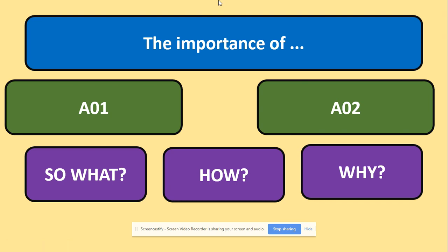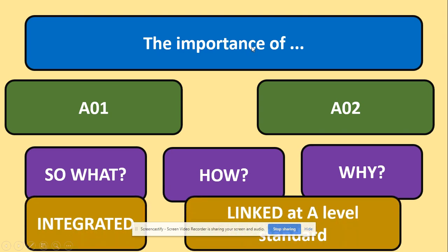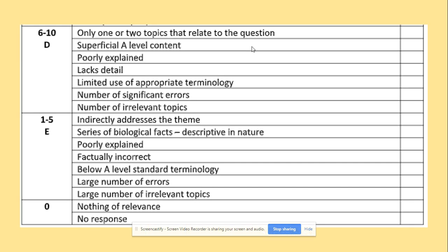Your essay has to be linked to the main essay topic using the vocabulary from the essay question, and it has to be integrated between the topics you've chosen. You need to choose between four to five topics and then obviously make an outstanding essay.